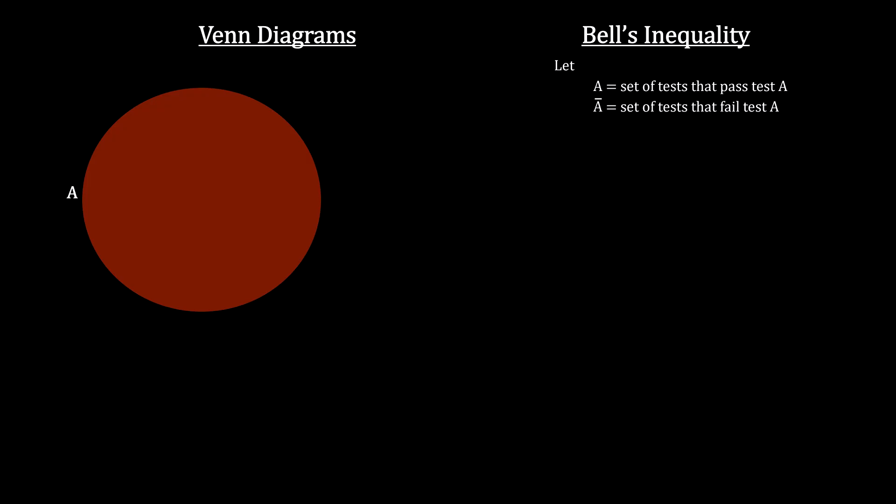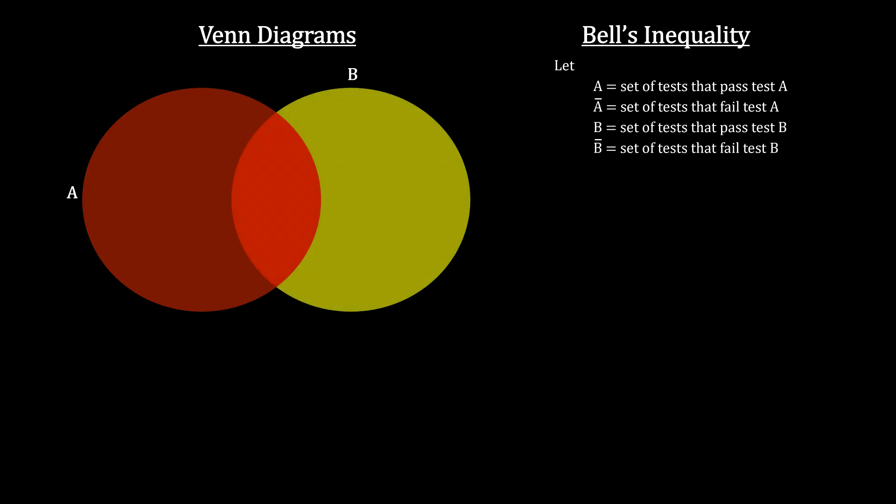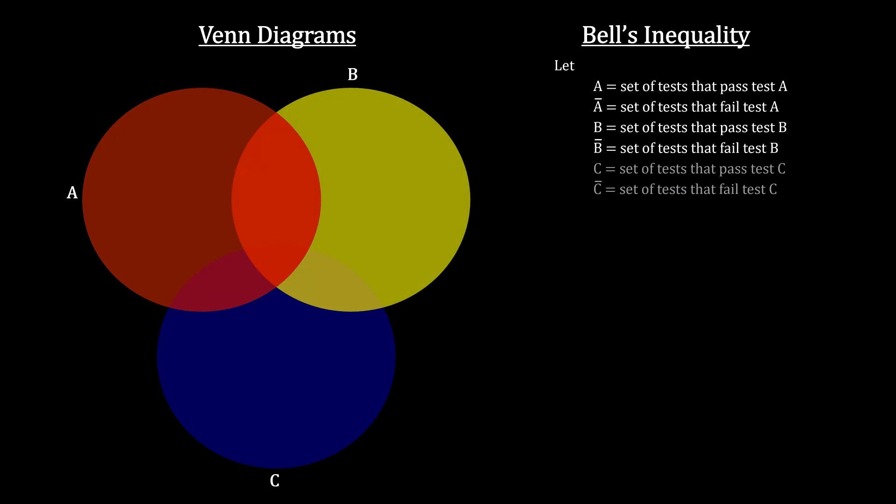Now consider the three sets. Set A of all the tests that passed test A. Set B of all the tests that passed test B. And set C of all the tests that passed test C. Notice where they overlap and where they don't.